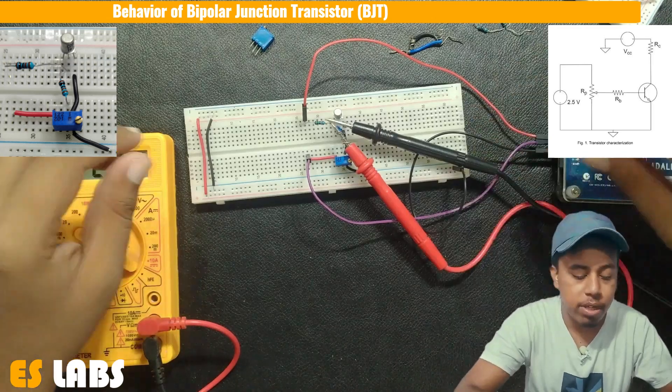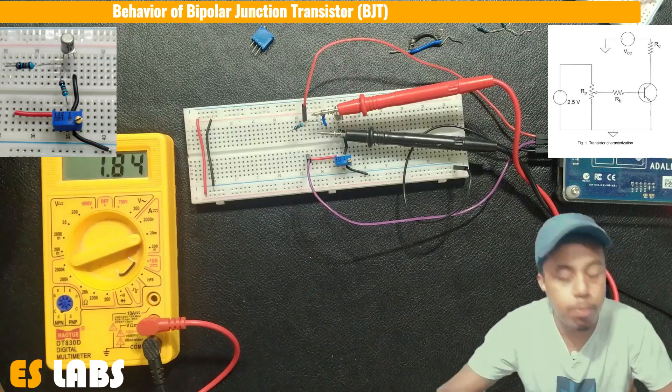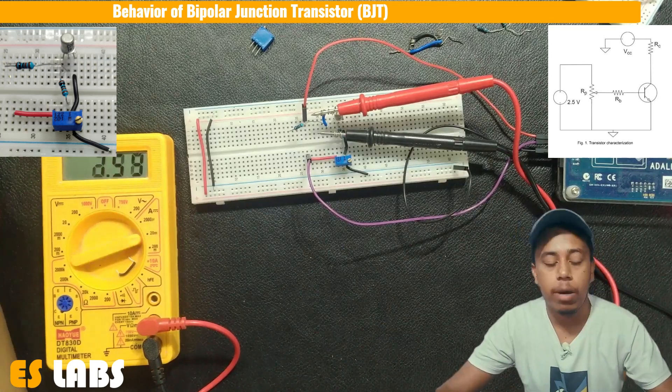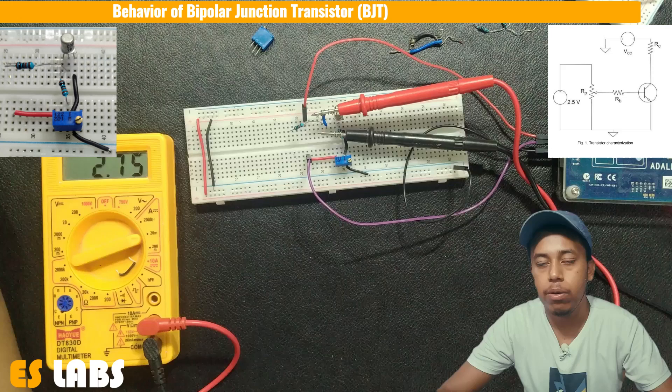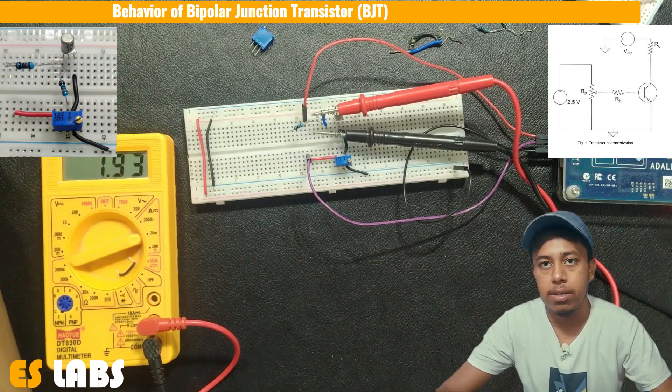We can also measure the current, so at 4 volt, this current is equal to 2.05 milliampere. Now we have collected the enough data and we are going to plot the graph of VCE versus IC.